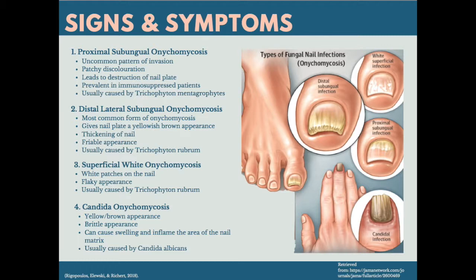The common signs and symptoms are what initially assist healthcare professionals when identifying the type of onychomycosis. Proximal subungal onychomycosis is an uncommon pattern of invasion which usually presents as a patchy discolouration, where the fungus enters via the proximal nail fold and spreads distally under the nail, which can eventually lead to destruction of the nail plate. This form is usually found in patients with chronic nail diseases and the immunosuppressed, and is usually caused by Trichophyton mentagrophytes.